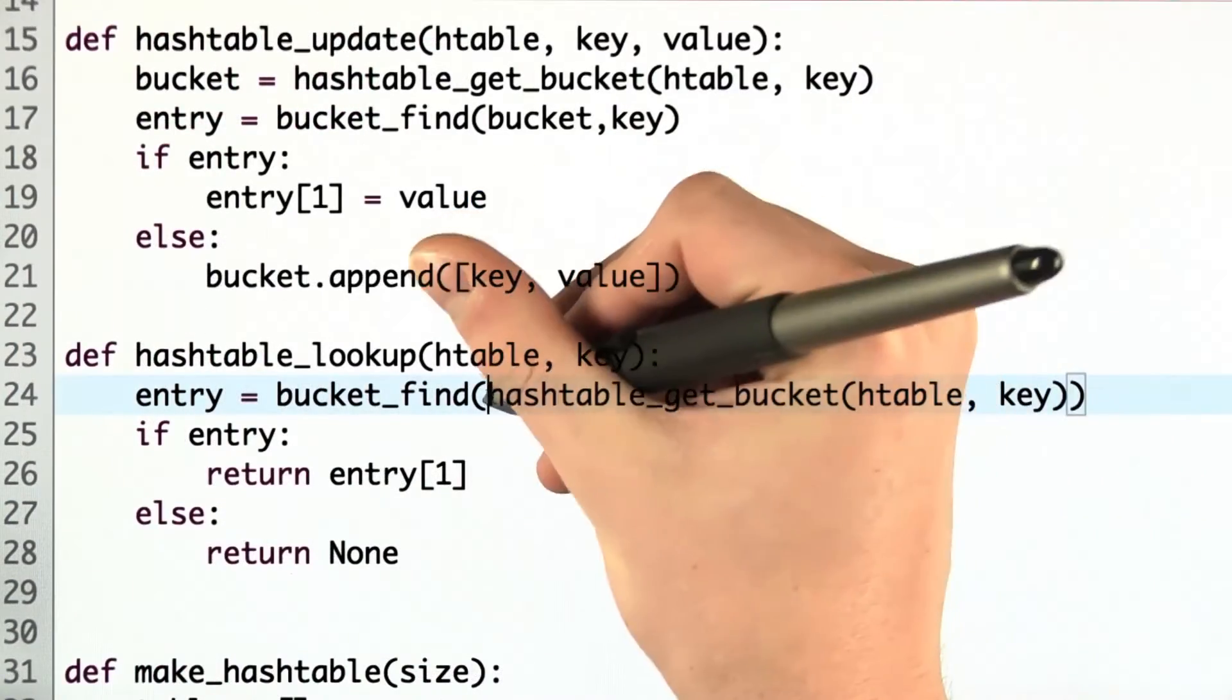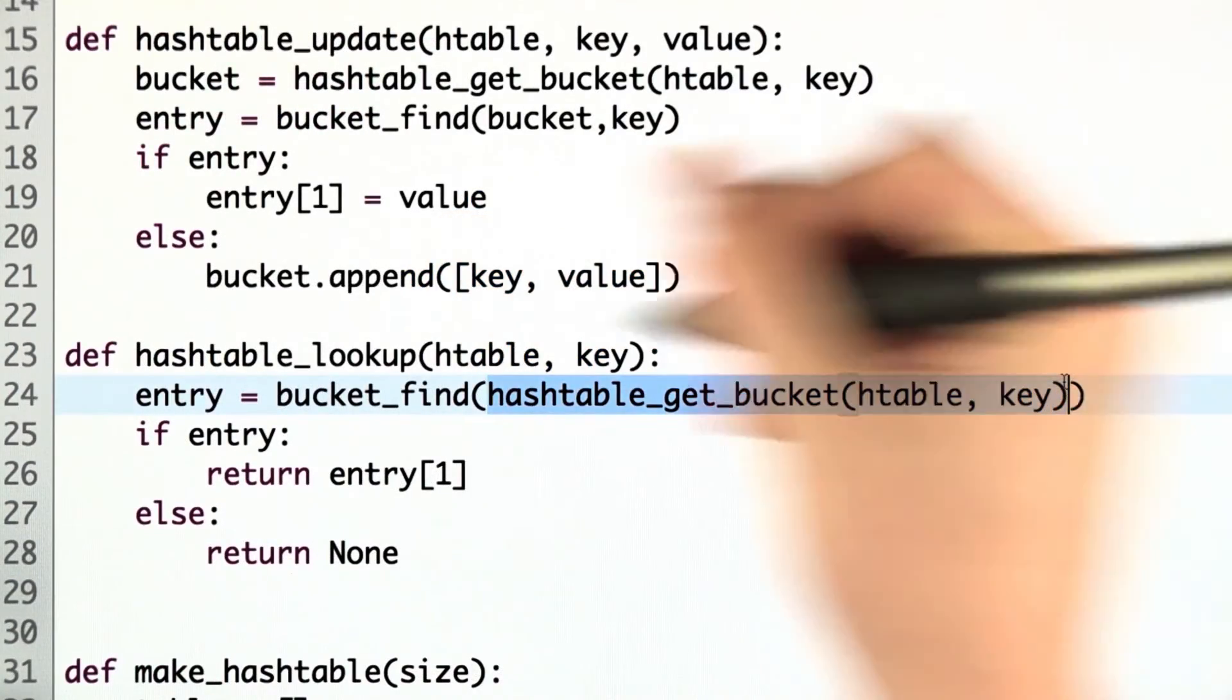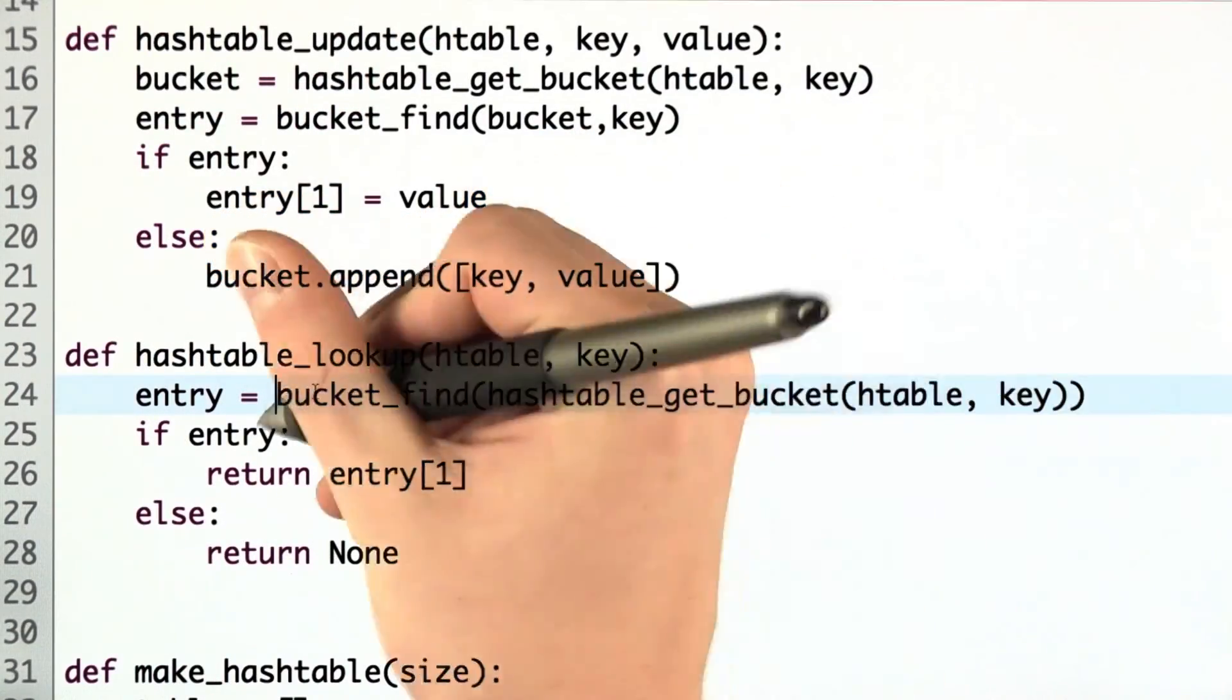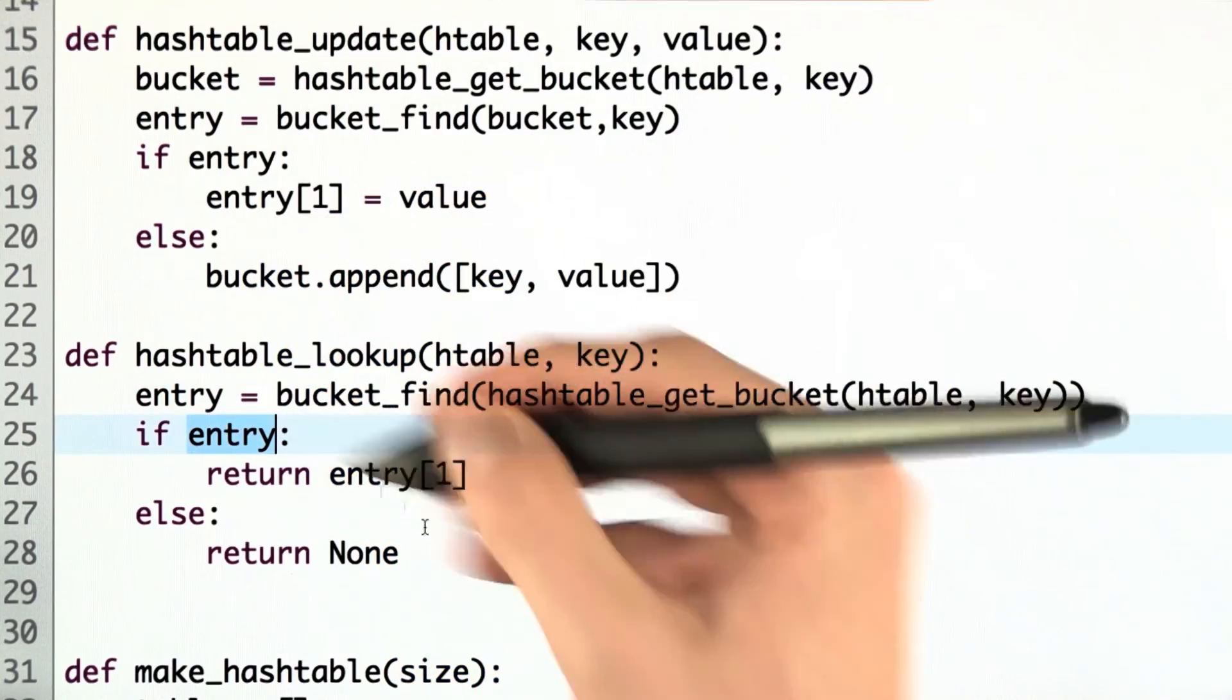Let's do the same thing to lookup. In the new Hashtable lookup, we first find the bucket, and then within the bucket, we search for the entry. If the entry is not none, we return the second value. Otherwise, we return none.